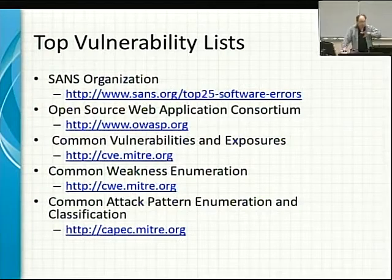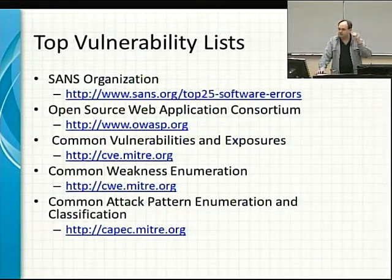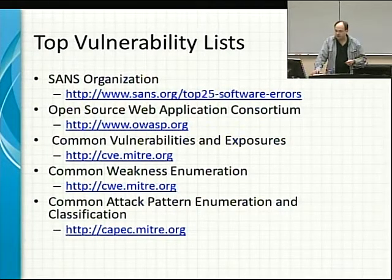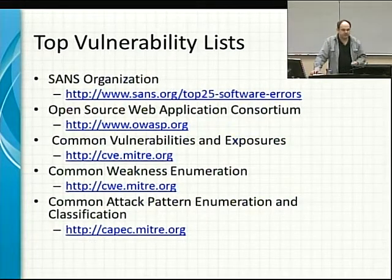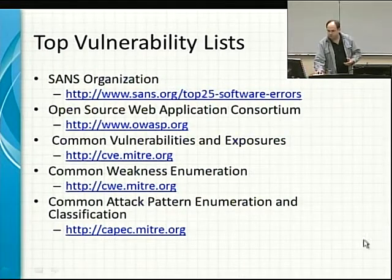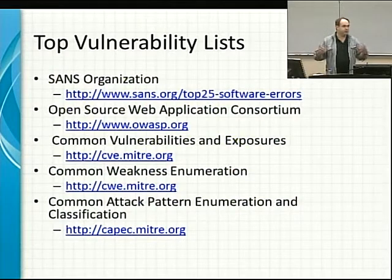There are several top vulnerability lists out there on the internet that you can look at. The SANS organization maintains their top 25 software errors. The Open Source Web Application Consortium has web-specific vulnerabilities. There's the Common Vulnerability and Exposure database maintained by MITRE along with the Common Weakness Enumeration. Both of these at MITRE maintain information about vulnerabilities we've seen in the wild.